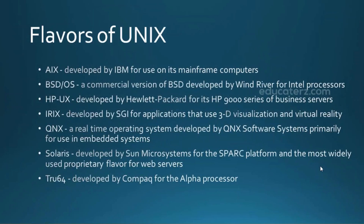We commonly come across UNIX clones and UNIX-like systems. In UNIX clones, the kernel of UNIX is used in their development and most of these operating systems are proprietary — meaning they can be installed only on the hardware of the company that developed the operating system. For example, AIX can be installed only on the proprietary hardware of IBM or compatible IBM-certified vendors.